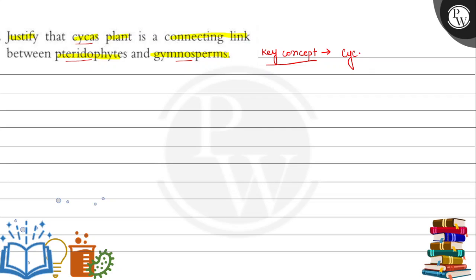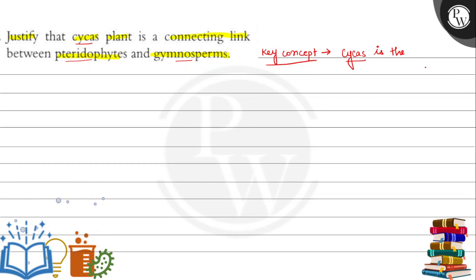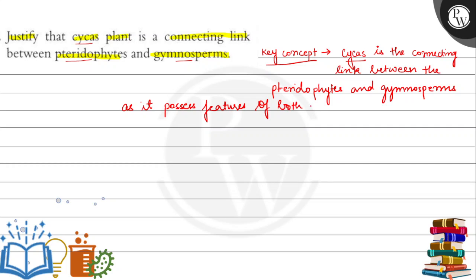Okay, so we can write over here the key concept: Cycas is the transition or connecting link between pteridophytes and gymnosperms as it possesses features of both the plant groups. The transition state means they have characteristics of both.